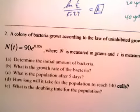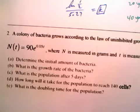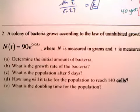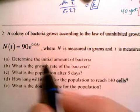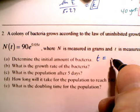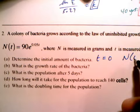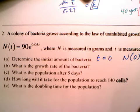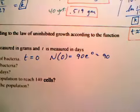We've got a colony of bacteria growing according to this particular law of uninhibited growth. It just means that as time goes on, the population is just going to get higher and higher. Initial amount of bacteria. Well, that's when T is equal to zero. So we get n sub zero equals 90 times e to the zero, which is 90.